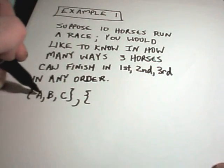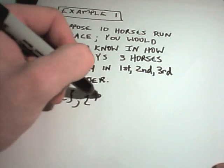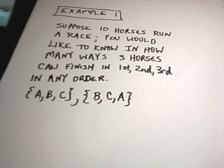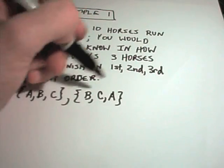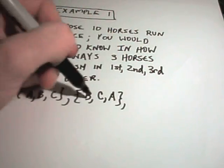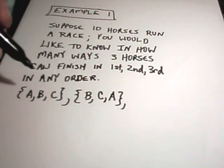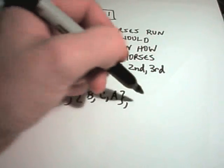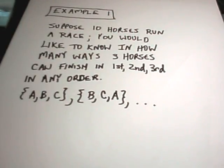Suppose again you bet on horse A, B, C. Maybe they come in B, C, A. Well, the three horses you bet on still come in first. It doesn't matter the order. So these are considered equivalent outcomes. The same horses finish in the top three places. And you could list the other ones as well.